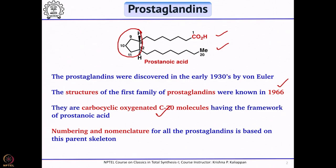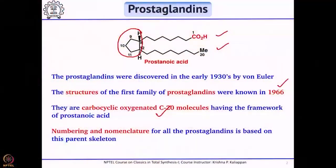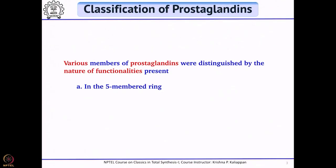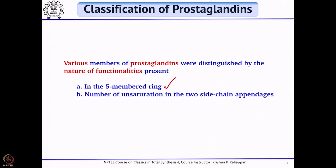How do you classify prostaglandins and how do you name them? It depends on the number of different functional groups present in the molecule. The basic structure is the same — cyclopentane with two side chains. Classification is based on two things: the functionalities present in the 5-membered ring, what functional groups are present and their relationship, and secondly, the number of unsaturations present in the two side chains.